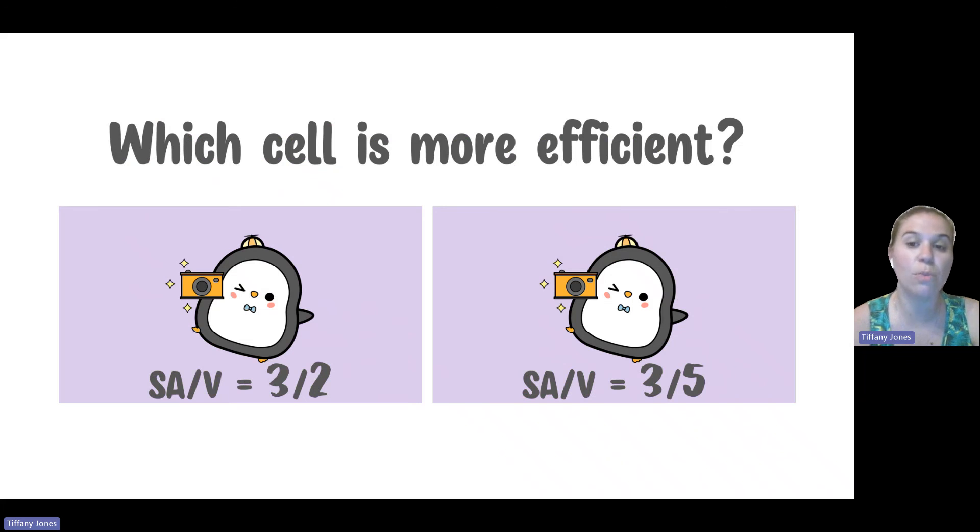So now, which of these two cells is more efficient? The more efficient cell is going to be the one that has the largest surface area to volume ratio. So since 3/2 is larger than 3/5, the first example we did was the more favorable, more efficient cell.